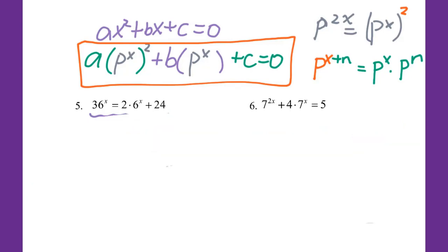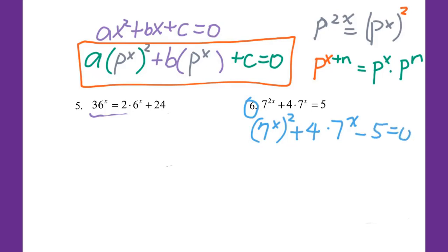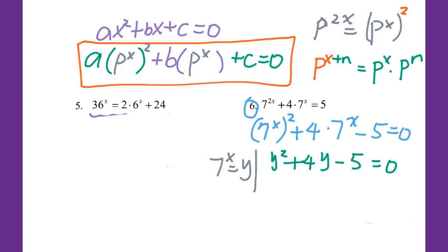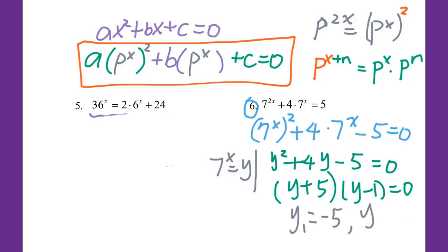Now let's go to number 6. I can write down 7x squared plus 4 times 7x minus 5 equal to 0. Since this is a quadratic pattern for an exponential function, make sure it's equal to 0. Then I set up 7 to the x power equal to y. So we get y squared plus 4y minus 5 equal to 0. Factoring, I get y plus 5 and y minus 1 equal to 0. Therefore y₁ equals negative 5 and y₂ equals 1.